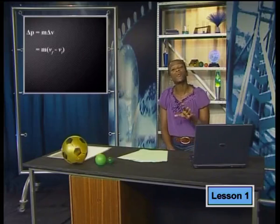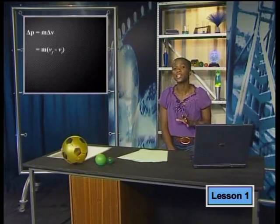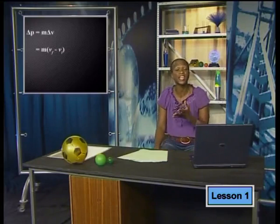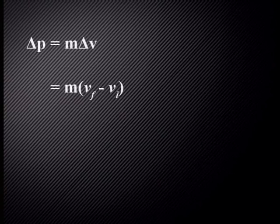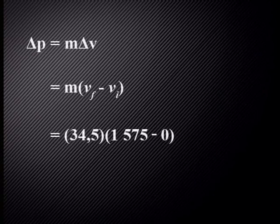Using the forward direction of the projectile as the positive direction, we can now calculate the projectile's change in momentum. The change in momentum equals the mass, 34.5, times the final velocity, 1,575, minus the initial velocity, 0.